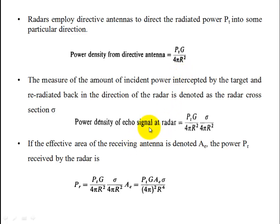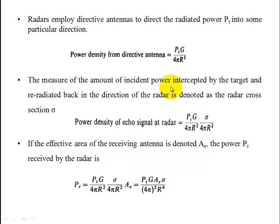Once the signal hits the target, an echo signal is produced. The power density of the echo signal at the radar is equal to PtG/(4πr²) × σ/(4πr²), where σ is the radar cross section. This gives the received power Pr = PtGAeσ / [(4π)² × r⁴].